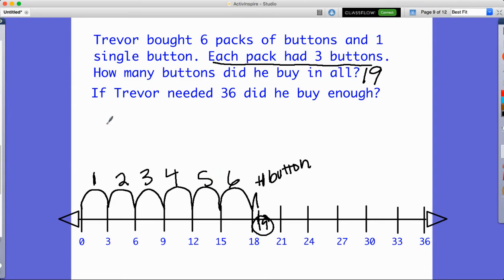So here I can see that as I multiply six by three, so six is my factor, the groups are my factor. And then this would be my product times three is 18. And then he bought that single one. So that was the first step in answering the question. Here was the next one, 18 plus one, 19 total buttons.